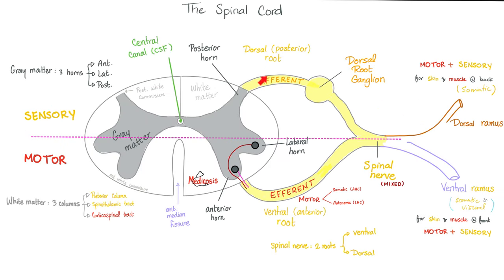Here is the spinal cord: posterior horn, lateral horn, anterior horn of gray matter. The lateral horn gives you autonomic fibers. If thoracolumbar, that's sympathetic; if sacral, that's parasympathetic.